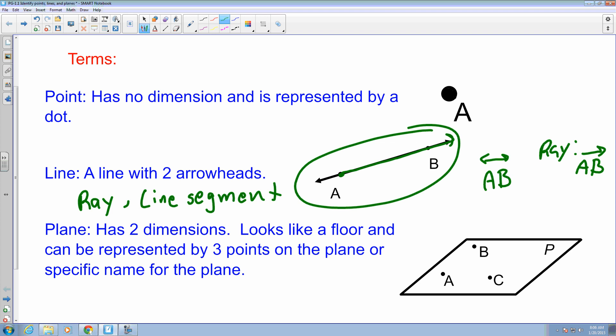The other one is a line segment. A line segment has an actual specific dimension. Alright, we can measure that because it has two stopping points.